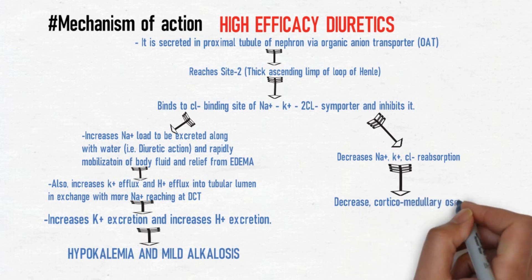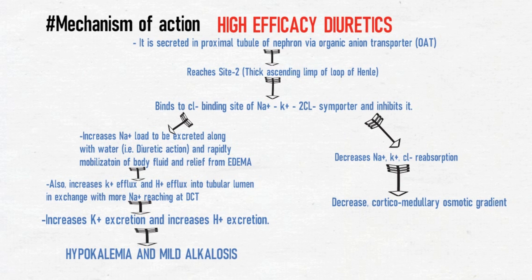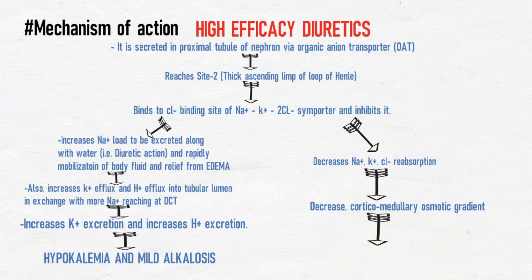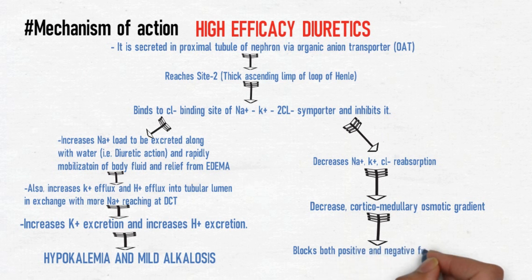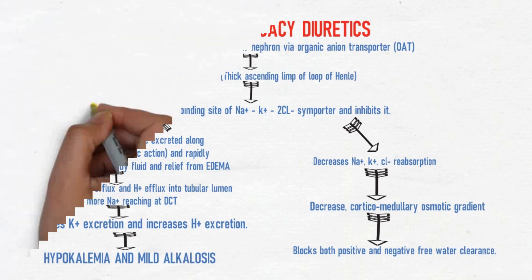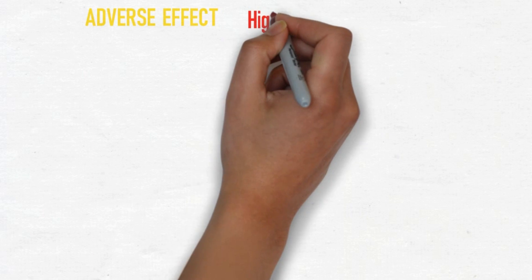Additionally, decreased sodium-potassium-chloride reabsorption results in a decrease of the corticomedullary osmotic gradient, blocking both positive and negative free water clearance. Other actions include increased calcium and magnesium excretion, increased triacylglycerol and LDL levels, decreased HDL levels, and increased blood uric acid levels.